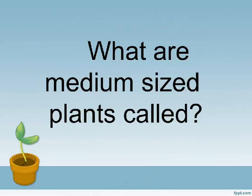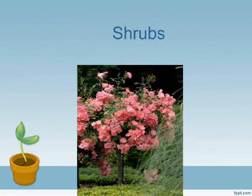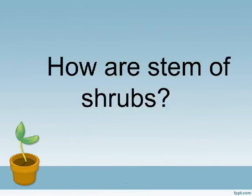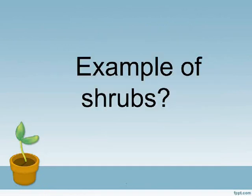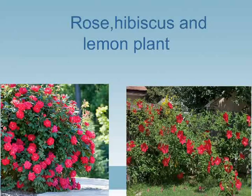What are medium-sized plants called? Shrubs. How are the stems of shrubs? Thin and hard. Examples of shrubs are rose, hibiscus, and lemon plant.